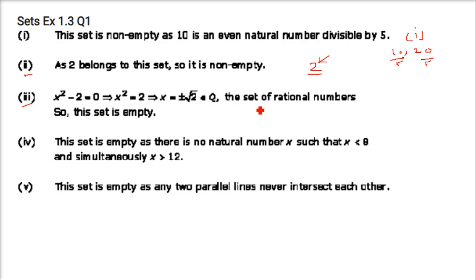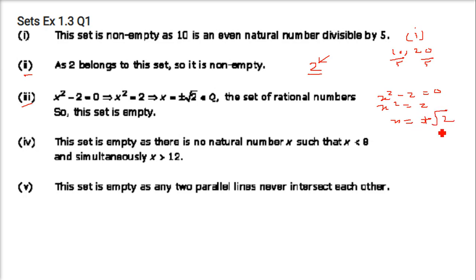Next: x is such that x² − 2 = 0 and x is rational. Solving: x² = 2, so x = ±√2. But ±√2 is an irrational number, and the question specifies rational numbers. So this set will be an empty set.